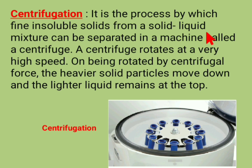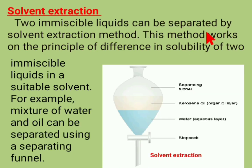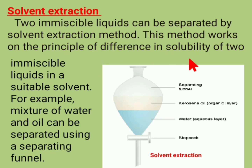The third process is the separating funnel. Two immiscible liquids can be separated by the solvent extraction method. For example, kerosene and water, or oil and water, can be separated by this method. It works on the difference in the solubility of two immiscible liquids in a liquid solvent.